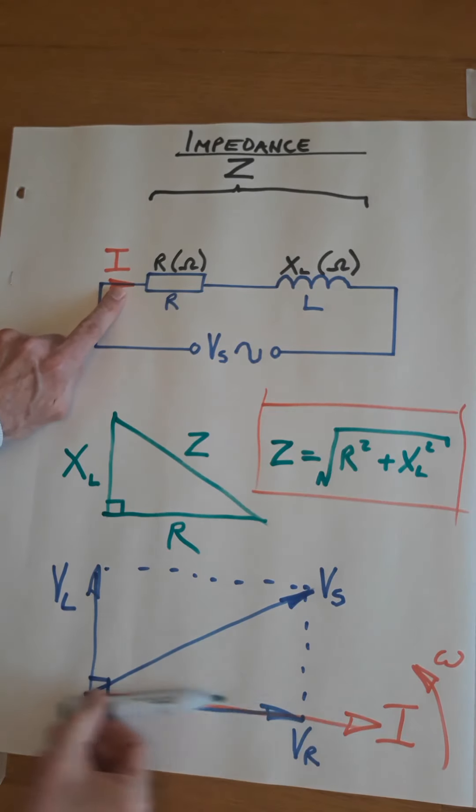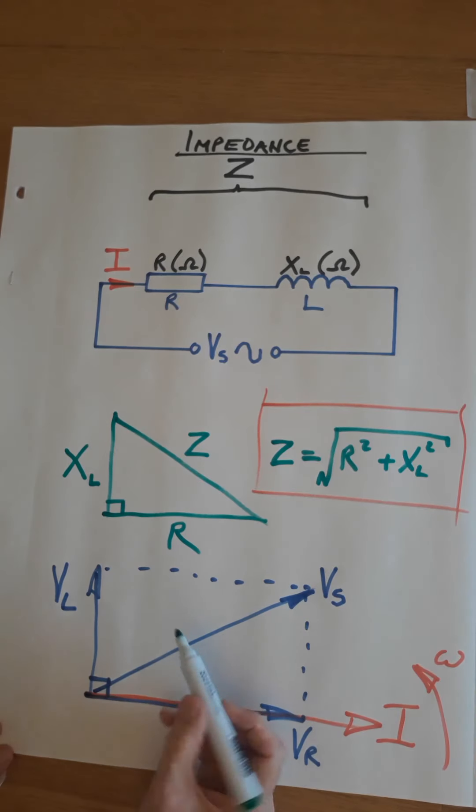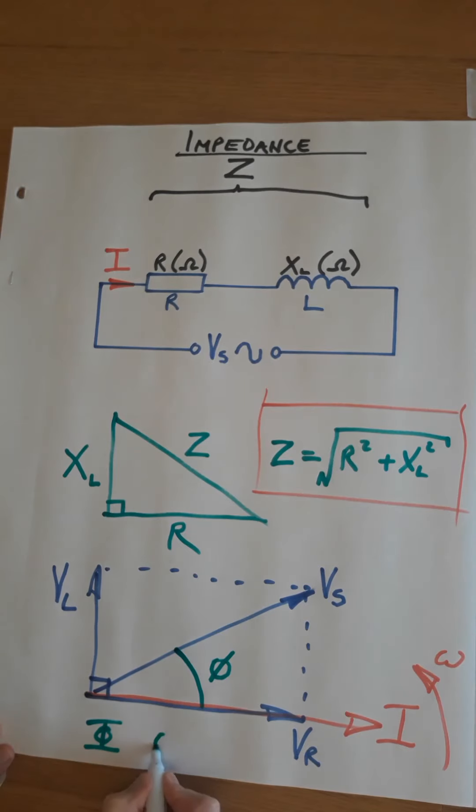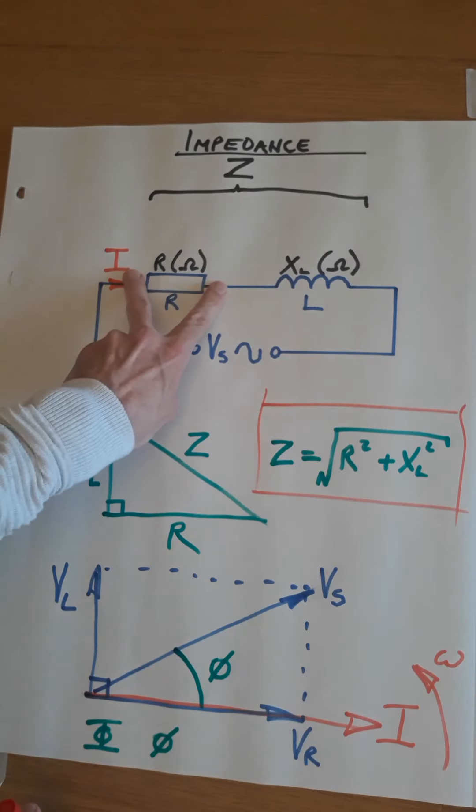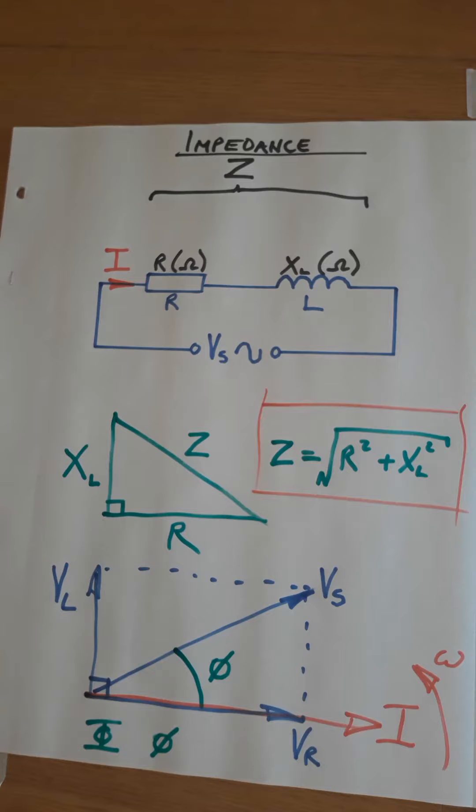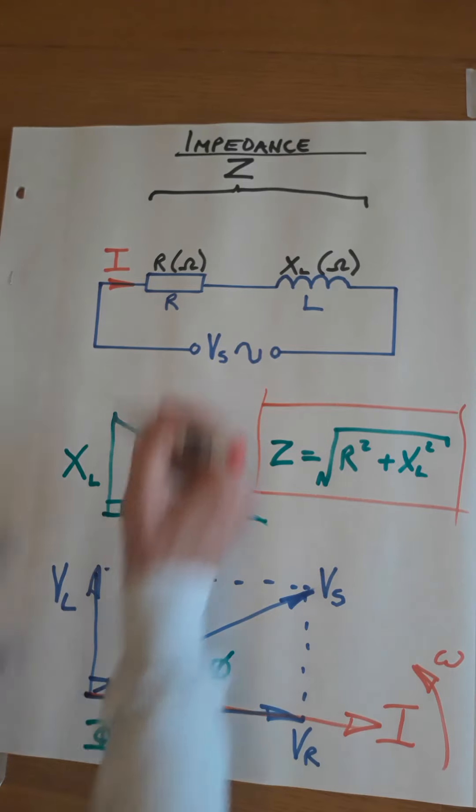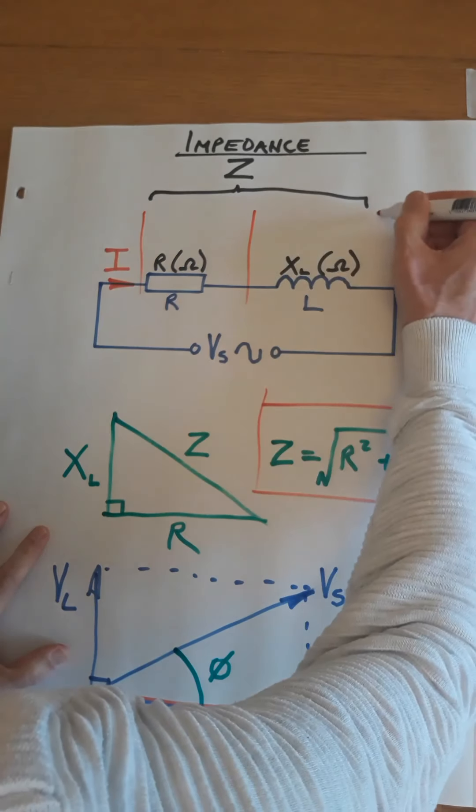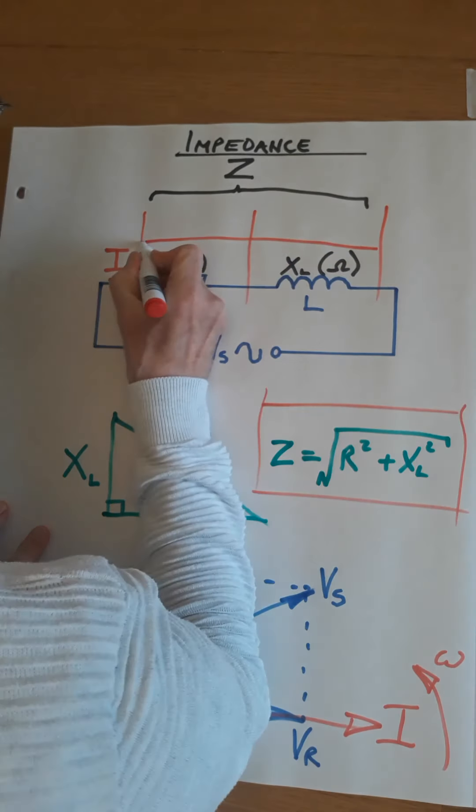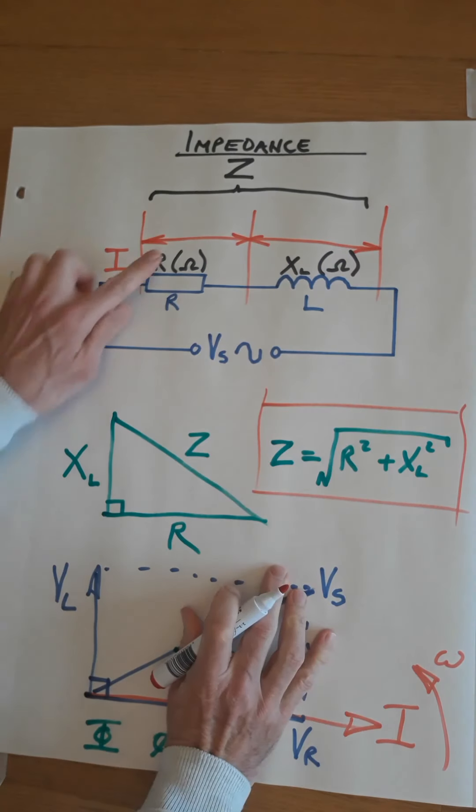And then we come to the inductor. What's the relationship with voltage and current in an inductor? Current lags voltage. There's the current, so the voltage is going to be there and the current is going to lag behind it. So there is the voltage across the inductor.